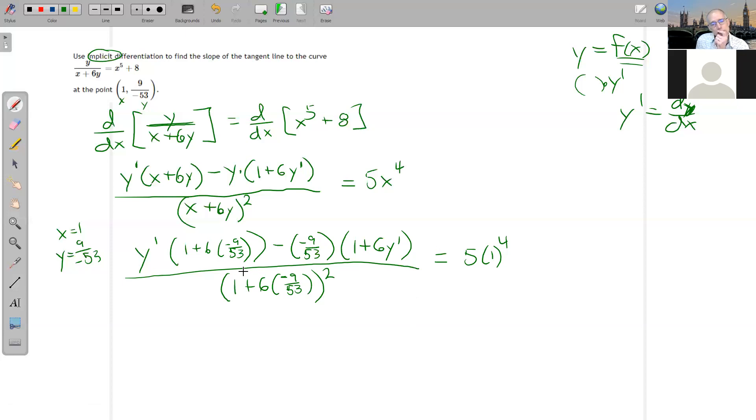All right. So cleaning this up a little bit. Here we can clean that up. Let's do that off to the side. So 6 times 9 is 54. 1 is 53 over 53, right? So that's my 1. And then it's going to be minus, because I have a positive times a negative, 54 over 53, which is negative 1 over 53. So I've got Y prime times negative 1 over 53.